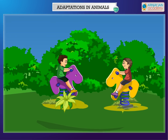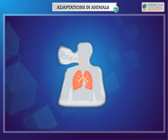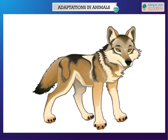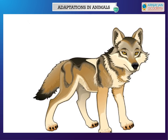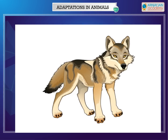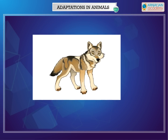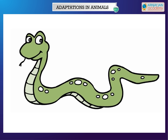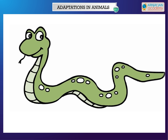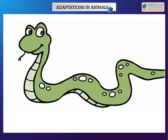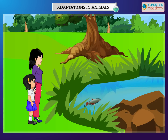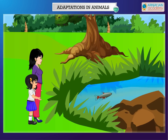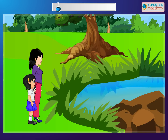Terrestrial animals breathe with the help of lungs. They have well-developed senses such as sense of hearing or smell. This helps them to hunt for food and protect themselves from their enemies. They have legs to help them move. However, some animals such as snakes crawl along the ground. How do animals survive in extremely harsh climates like deserts and polar regions?